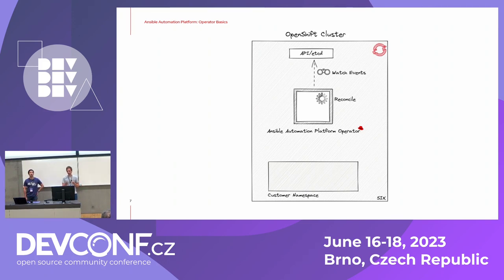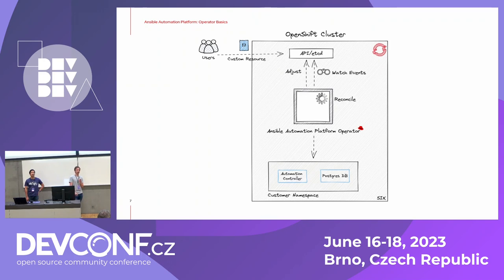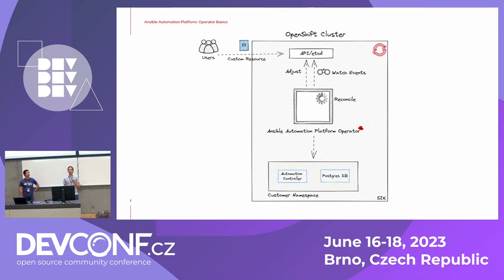On the bottom you see the customer namespace. How can a customer or an internal developer actually interact with this operator? There are the so-called custom resources. Users can create custom resources to interact with this operator, and as soon as a customer creates a custom resource, the operator realizes that and will apply this change. In this case, it realizes that an employee wants to have an automation controller, so it automatically detects that and bootstraps the automation controller in the customer namespace.